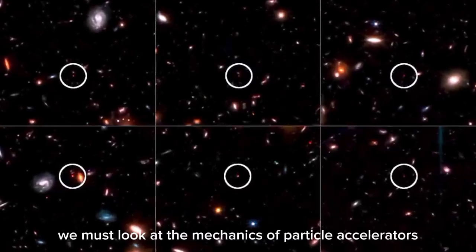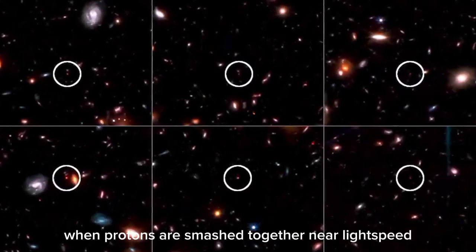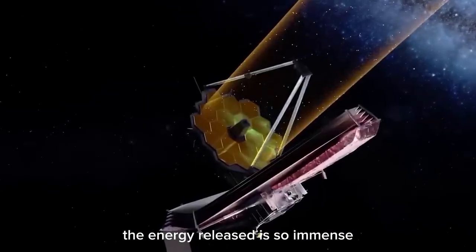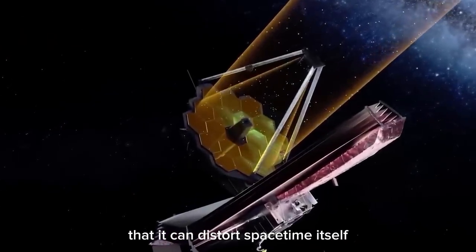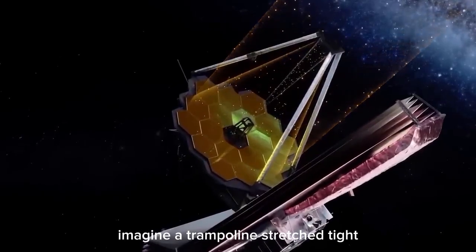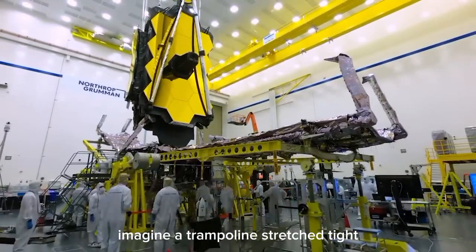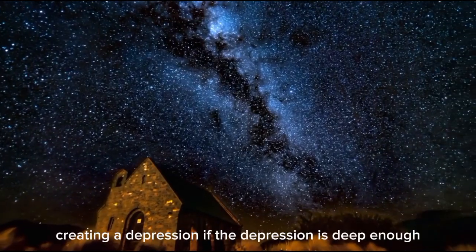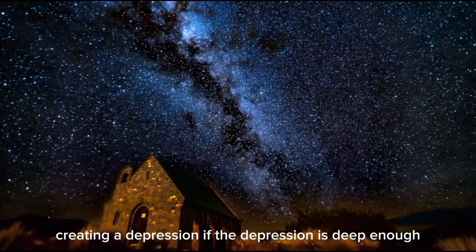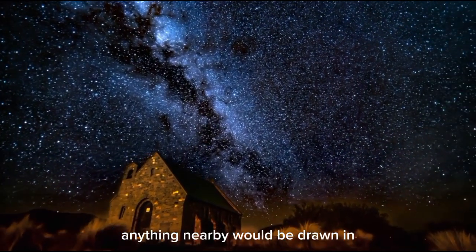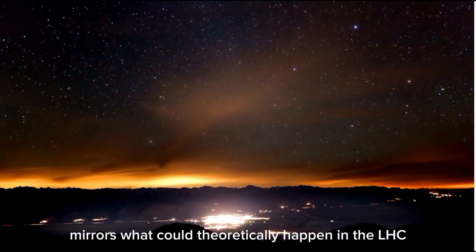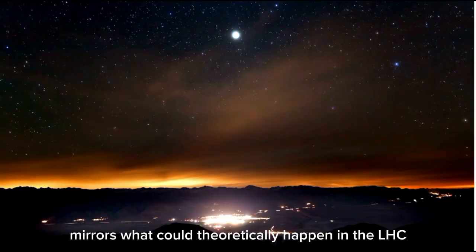To understand how the LHC might form a black hole, we must look at the mechanics of particle accelerators. When protons are smashed together near light speed, the energy released is so immense that it can distort space-time itself. Imagine a trampoline stretched tight, then having a heavy weight placed on it. The fabric dips, creating a depression. If the depression is deep enough, anything nearby would be drawn in. This crude analogy mirrors what could theoretically happen in the LHC.